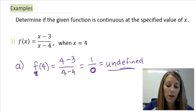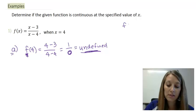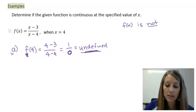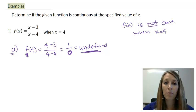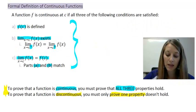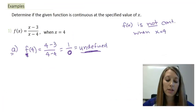Since we have something undefined in property a, we do not have to move on any further. That means f(x) is not continuous when x = 4, and we don't have to do any more work to prove it. To prove something is discontinuous you only have to disprove one property.